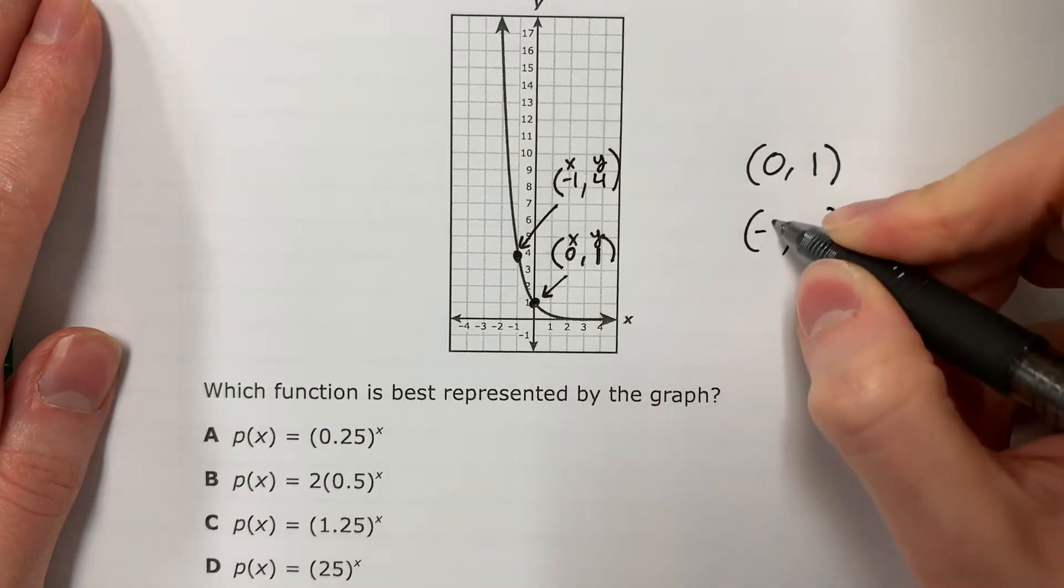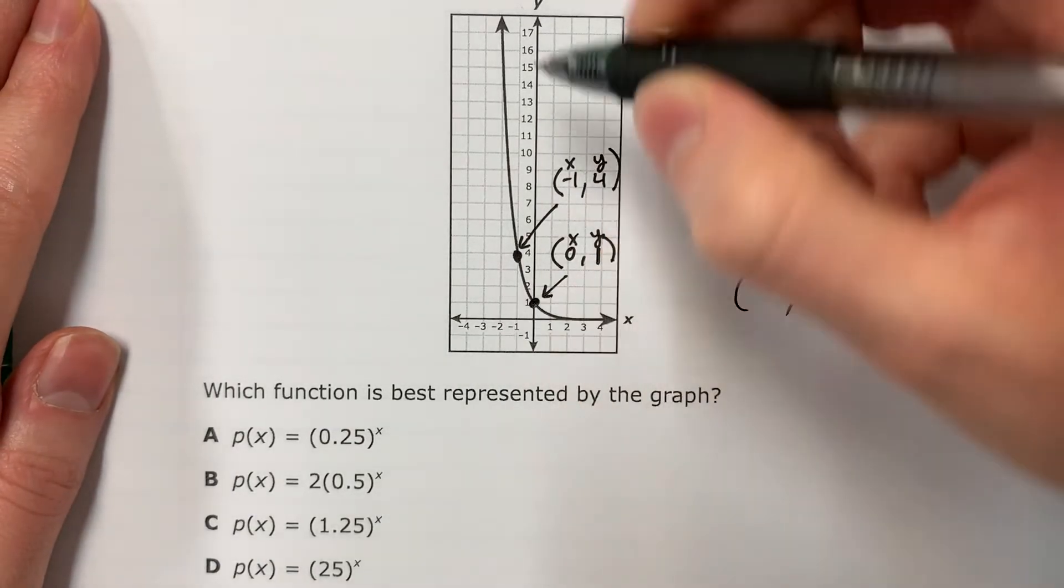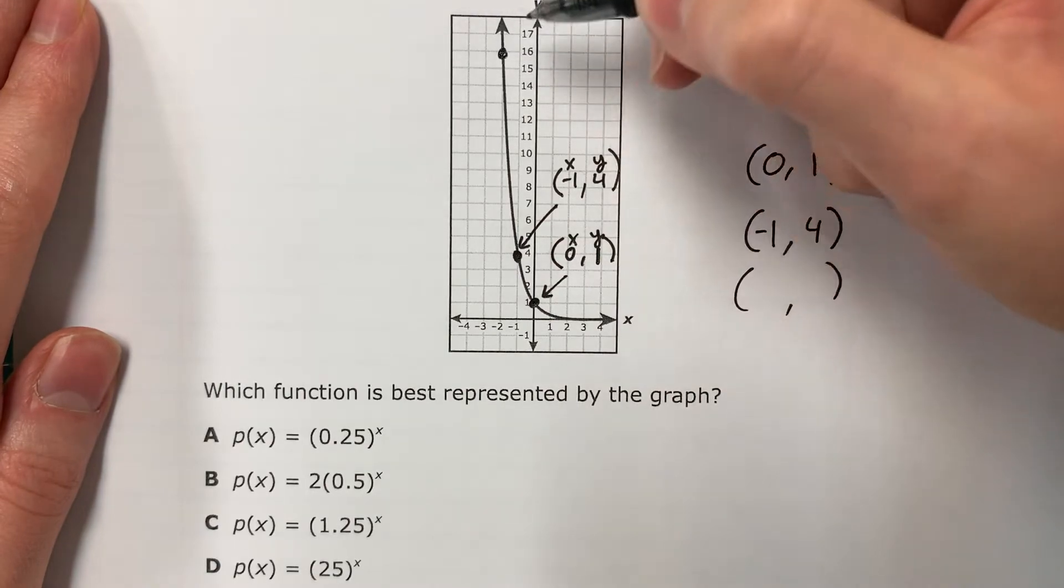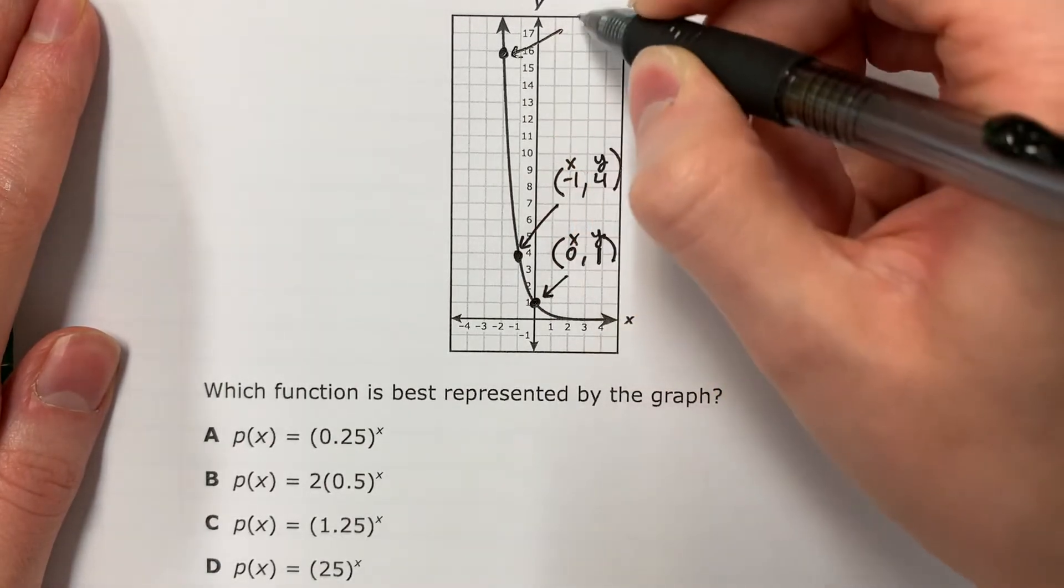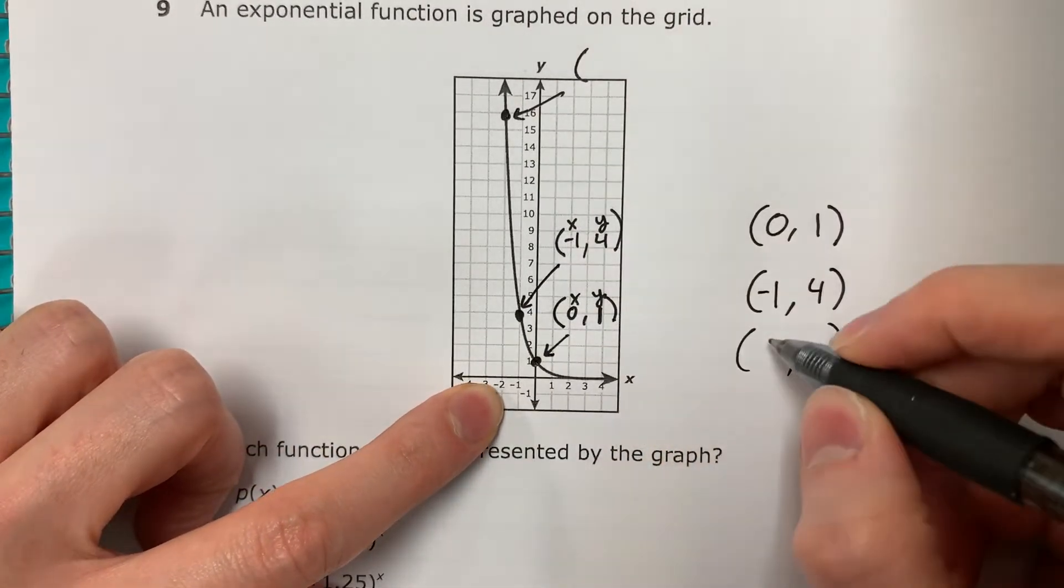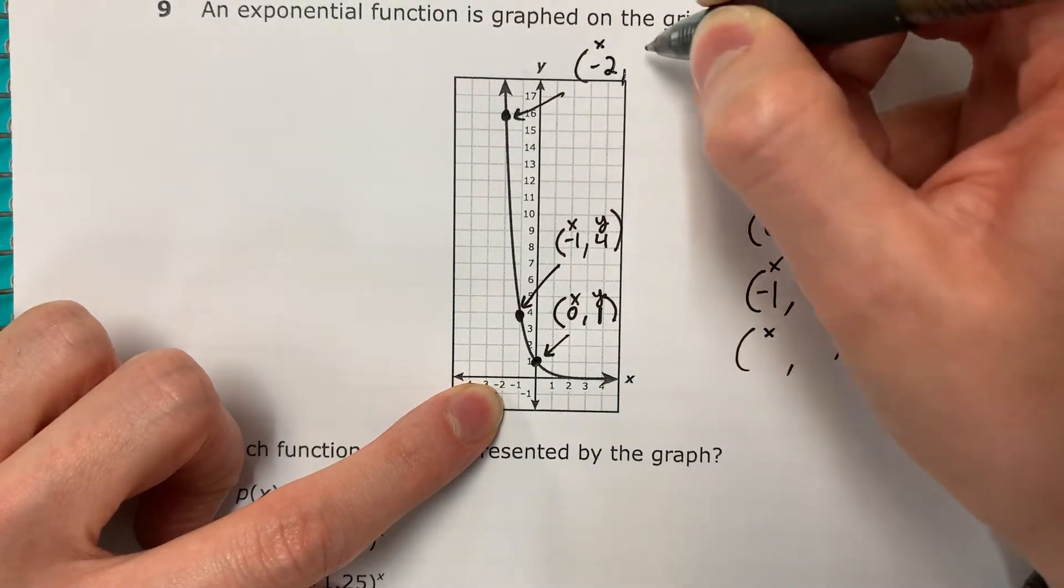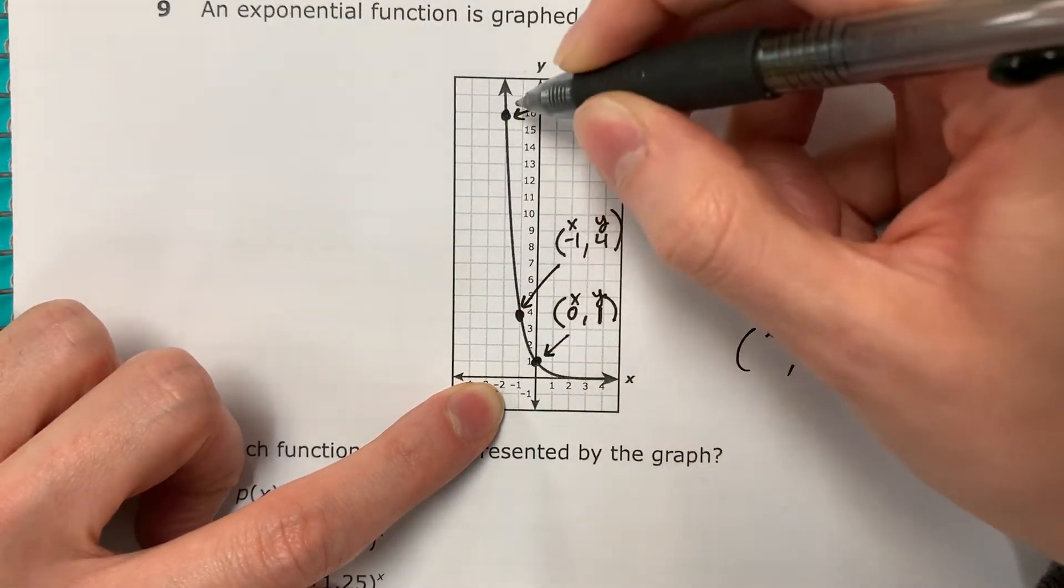And you know what? Let's do one more. Looks like negative two, sixteen. So X, negative two. Y, sixteen.